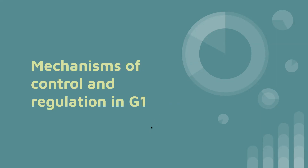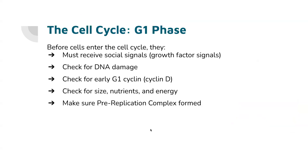Now going more specifically into mechanisms of control in G1. During G1, cells have to make sure they're ready to divide. They first have to receive social signals, such as a growth factor, which initiates the process of moving towards division, but they're not necessarily reaching the restriction point yet. Before they reach the restriction point, they check for DNA damage, they check for early G1 cyclin D, they check for size, nutrients, and energy, and they make sure the pre-replication complex is formed.